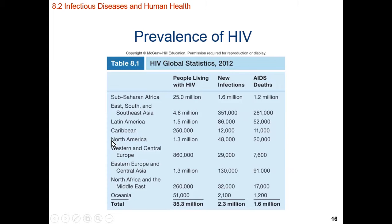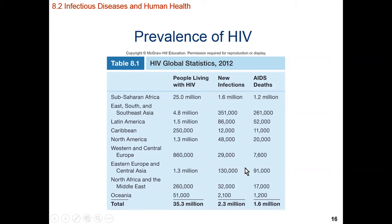If we look at North America as a whole, we have about 1.3 million people living with HIV, with an estimated 48,000 new infections annually and 52,000 deaths from HIV-AIDS. So in other words, the rate of infection is outpacing the rate of death — it's spreading right now.